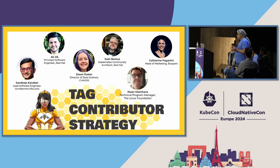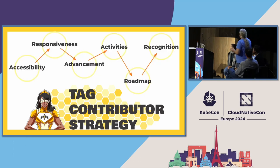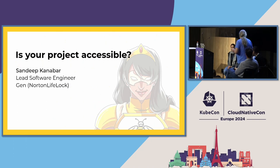All of us are contributors to TAG Contributor Strategy. You're going to meet everybody who's going to come up and speak, including Catherine and Dawn and Sandeep and Ali and Riyan, who are all going to talk about some of their areas of knowledge. The idea is to lead you down a little journey of all of the things that you do to attract and maintain contributors, including accessibility and responsiveness and advancement and activities and roadmaps and recognition. With that, I want to get started with talking about accessibility with Sandeep.